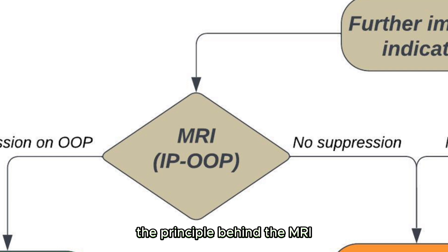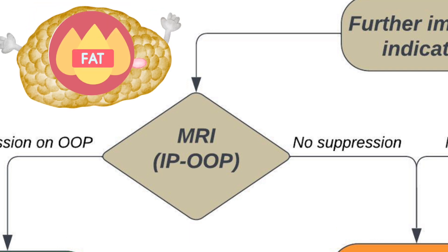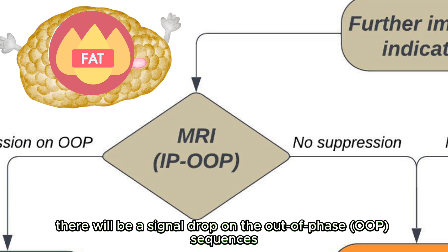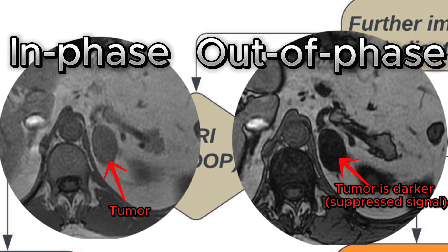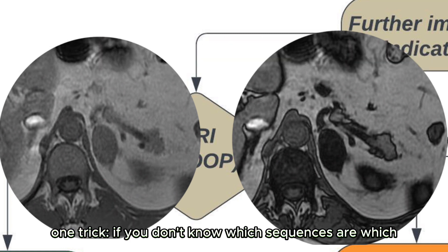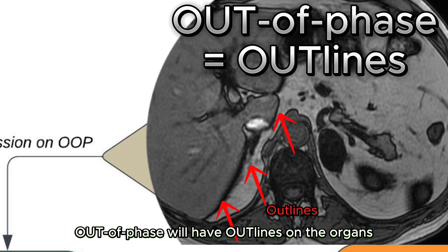The principle behind the MRI is that adenomas will contain intracytoplasmic lipid, which may be undetectable on CT. If the lesion contains fat, there will be a signal drop on the out-of-phase sequences compared to in-phase. One trick: if you don't know which sequences are which, just remember that out-of-phase will have outlines on the organs.